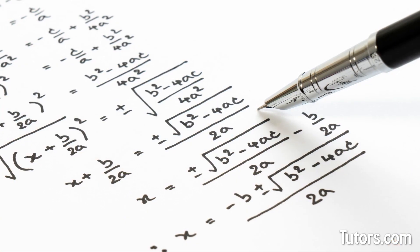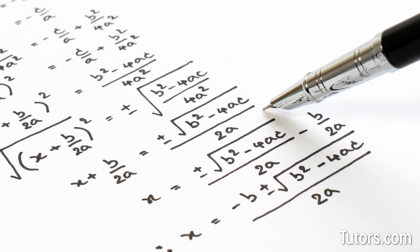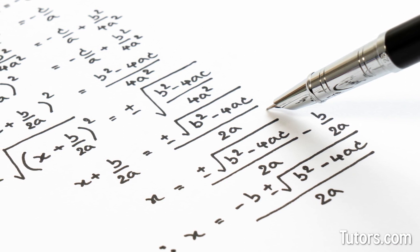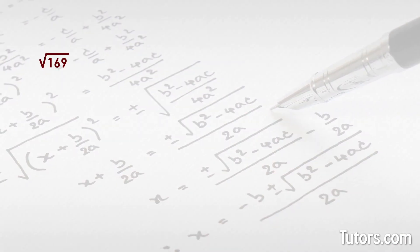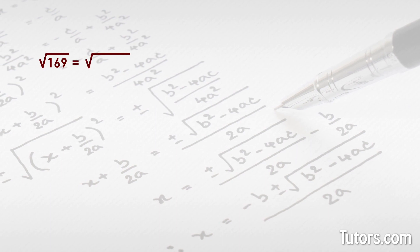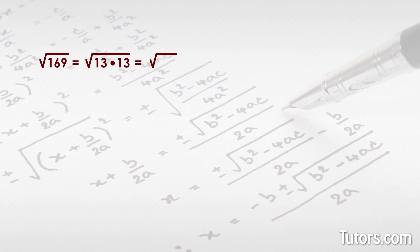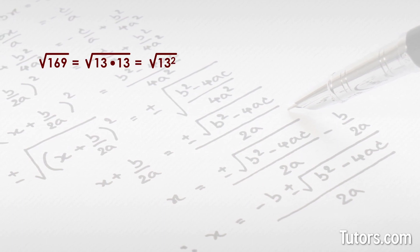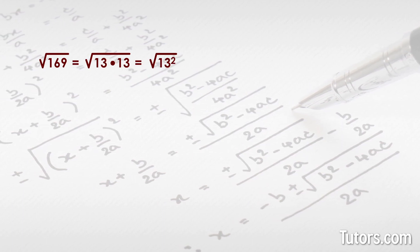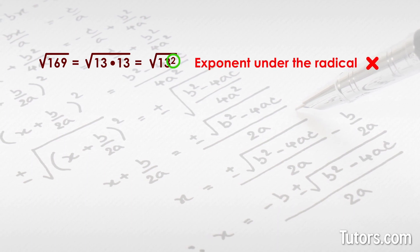Now we can rewrite the original problem, substituting our found factor for the original number. The square root of 169 equals the square root of 13 times 13, or the square root of 13 squared. This equation is technically true, but we cannot leave the exponent under the radical.